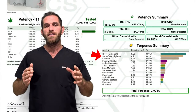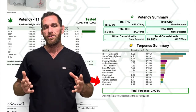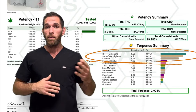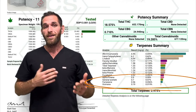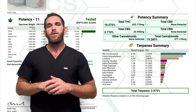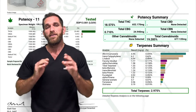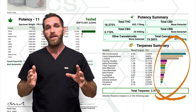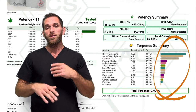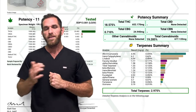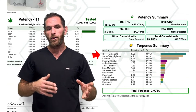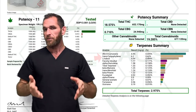The top terpenes are more abundant, and the terpenes towards the bottom are less abundant. Next to the individual terpene concentrations, you can also see a horizontal bar chart infogram showing the amounts of each terpene relative to one another. This makes it easy to see which terpenes are dominating right from the get-go.